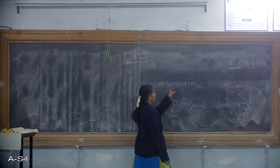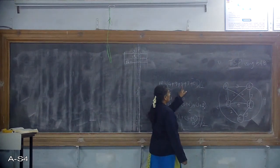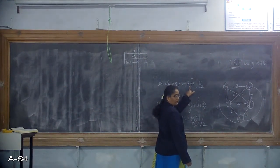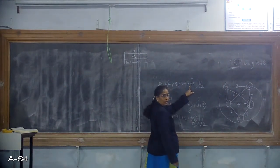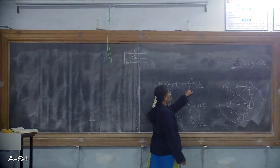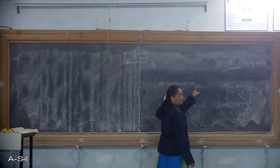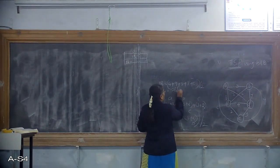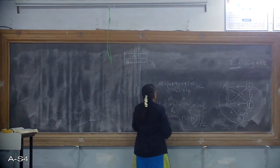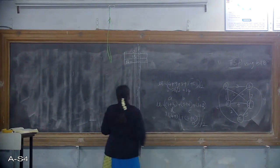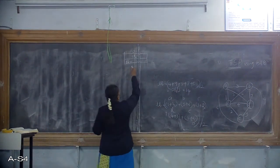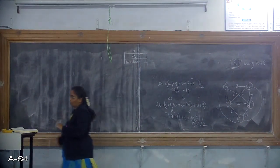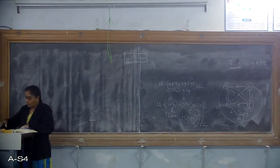9 plus 4 equals 13. This is 16. 16 plus 7: what is 16 plus 7? It is 23. 23 plus 5 gives the LB value. The LB value is 14.